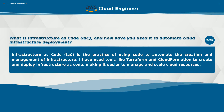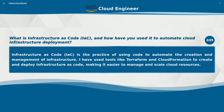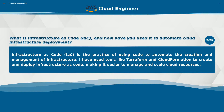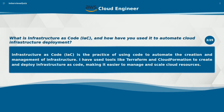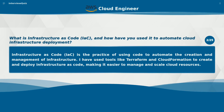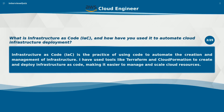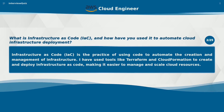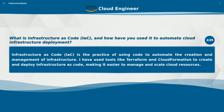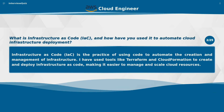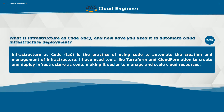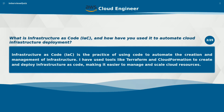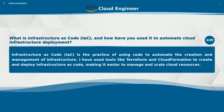What is Infrastructure as Code (IAC) and how have you used it to automate cloud infrastructure deployment? Infrastructure as Code (IAC) is the practice of using code to automate the creation and management of infrastructure. I have used tools like Terraform and CloudFormation to create and deploy infrastructure as code, making it easier to manage and scale cloud resources.